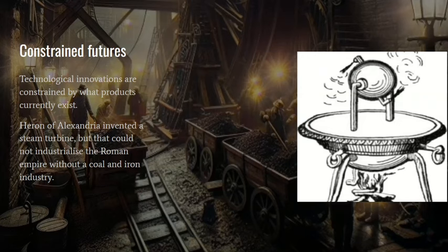So societies with technology have constrained futures. Technological innovations are constrained by what products currently exist. We know that Heron of Alexandria invented a steam turbine. But that turbine didn't result in the industrialization of the Roman Empire. Because the other components that are necessary to build powerful steam engines, like coal and an iron industry capable of producing large forgings, didn't exist.